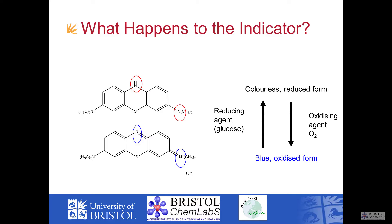Oxidation is loss of electron. So, in going from the colorless molecule on the top to the blue form of the molecule — the oxidized form below — we've seen two ways that we can judge oxidation: loss of hydrogen or loss of electrons.